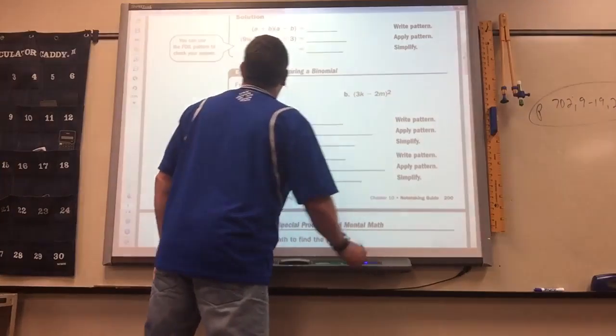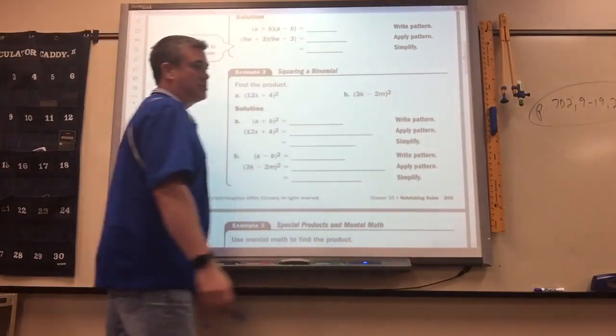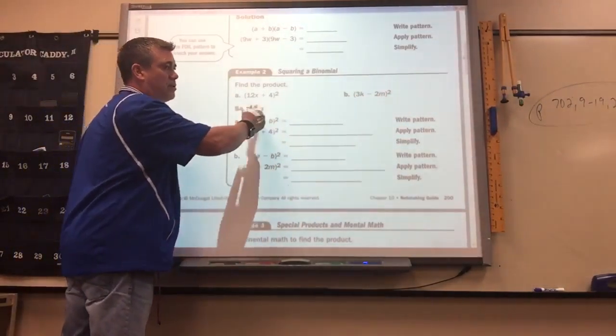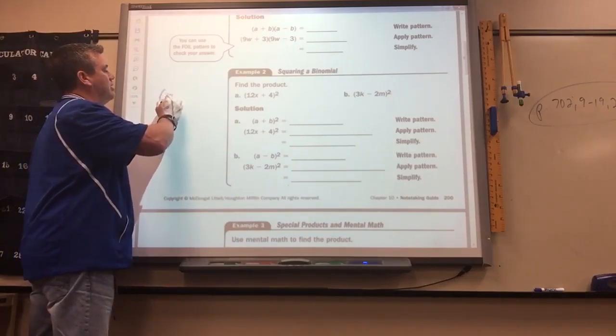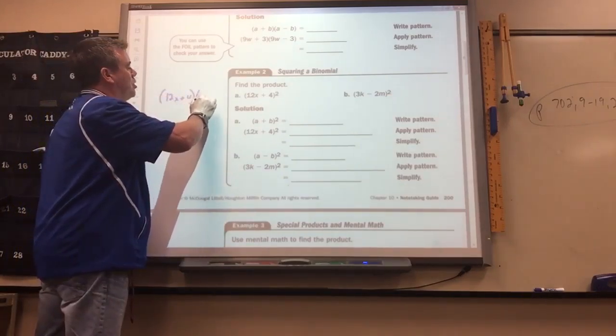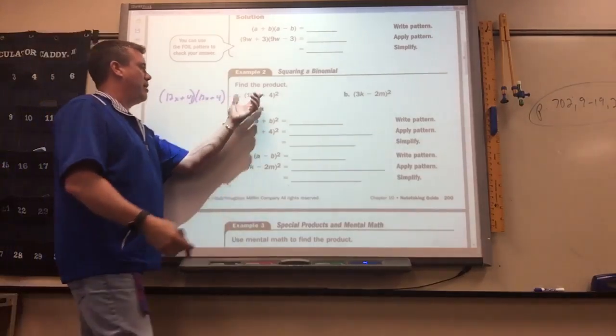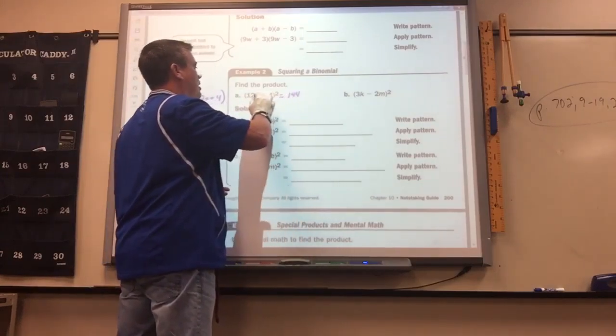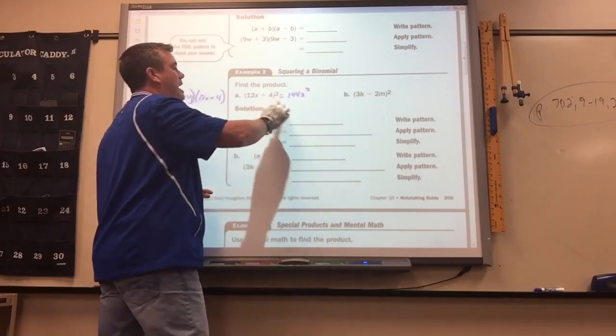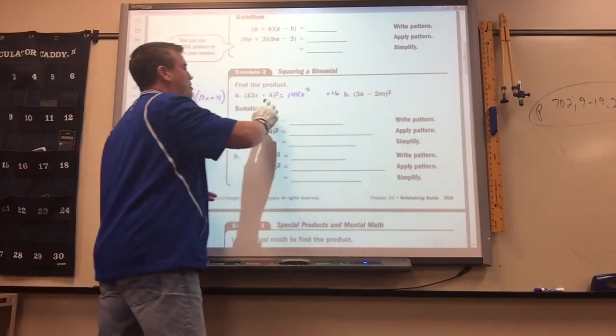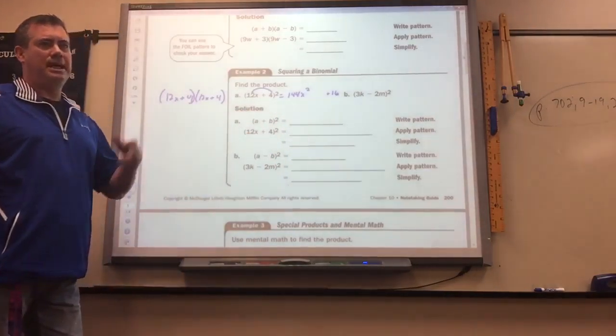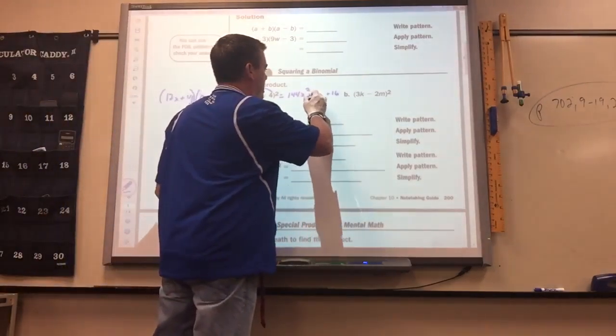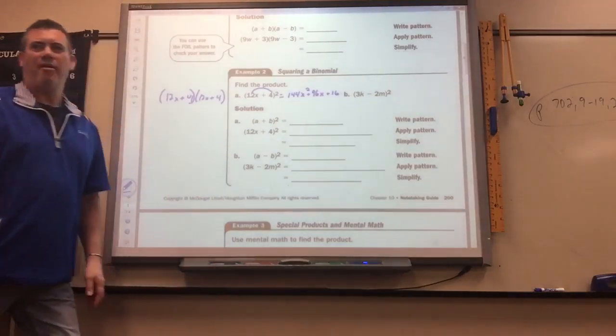So the special products are when they're squared. And again, you don't need to follow the shortcut. You can do it the long way: take 12x plus 4 times 12x plus 4. But if you remember, this is just going to equal you square the first. 12 squared is 144x squared. Square the last. And then the middle term is these two multiplied together and then doubled. 12x times 4 is 48x times 2 is positive 96x.